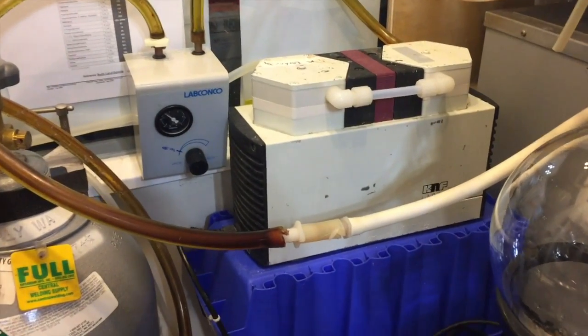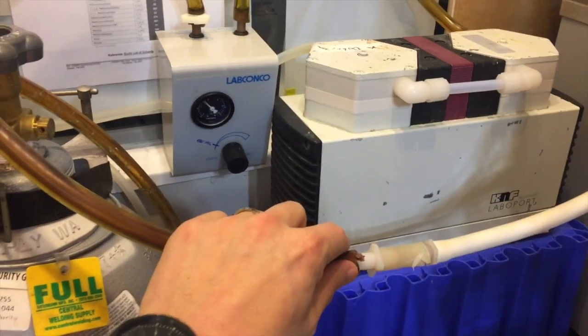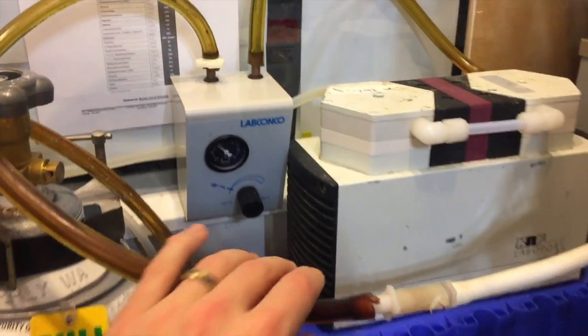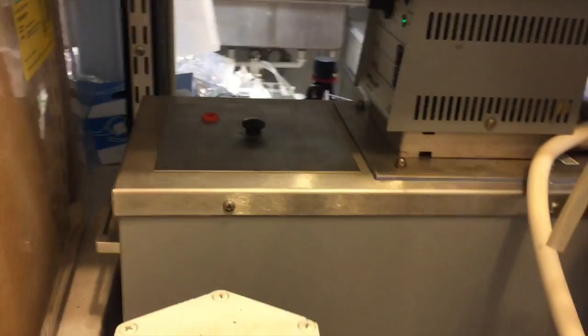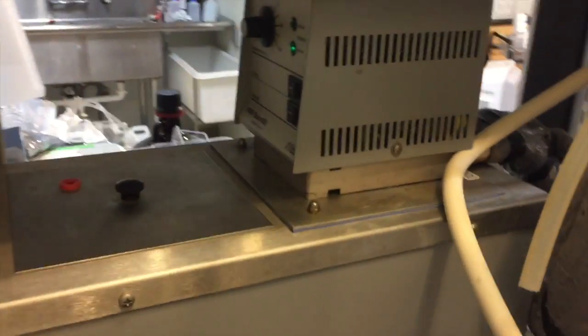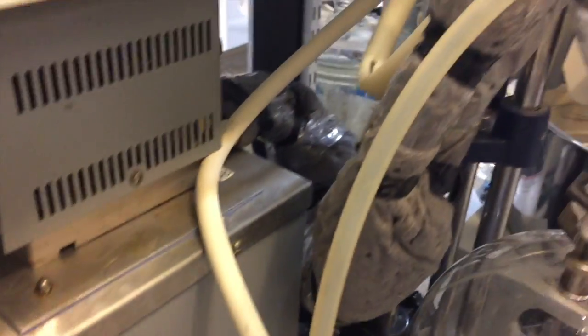And here I have it hooked up to a low vac pump with a regulator and just a quick disconnect because I use this vacuum in my hood for other applications. And again, an anti-freeze chiller set around negative 30 with insulated lines.